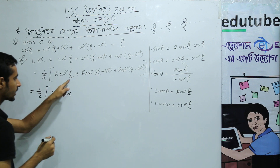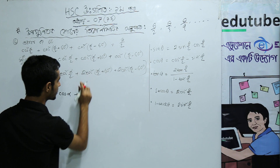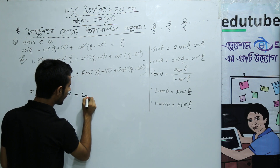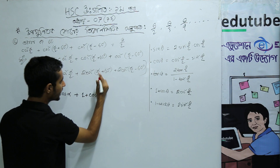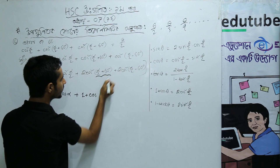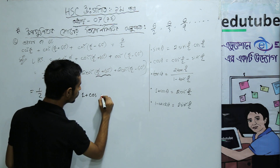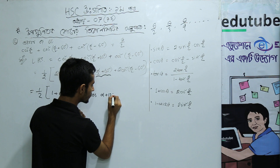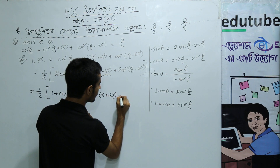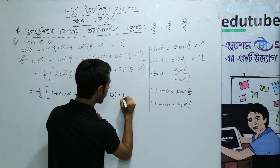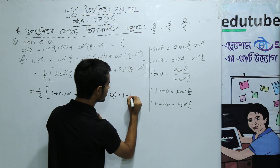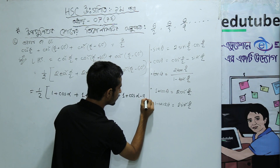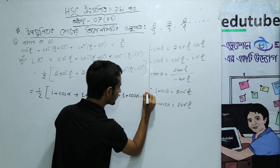So the first part becomes 1 plus cos alpha. The second part: 2 cos squared (alpha by 2 plus 60) equals 1 plus cos(alpha plus 120 degrees). The third part: 2 cos squared (alpha by 2 minus 60) equals 1 plus cos(alpha minus 120 degrees).